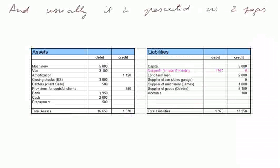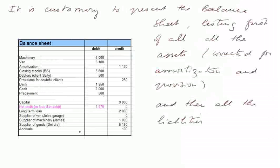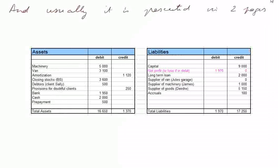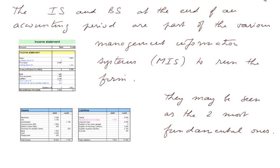Usually this balance sheet, instead of being presented like this, is presented in two pages. One page is specifically the assets and the other page is the liabilities. But this is really one document — it could be one page instead of two. The income statement and balance sheet at the end of an accounting period are part of the various management information systems, MIS, to run the firm, and may be seen as the two most fundamental ones.